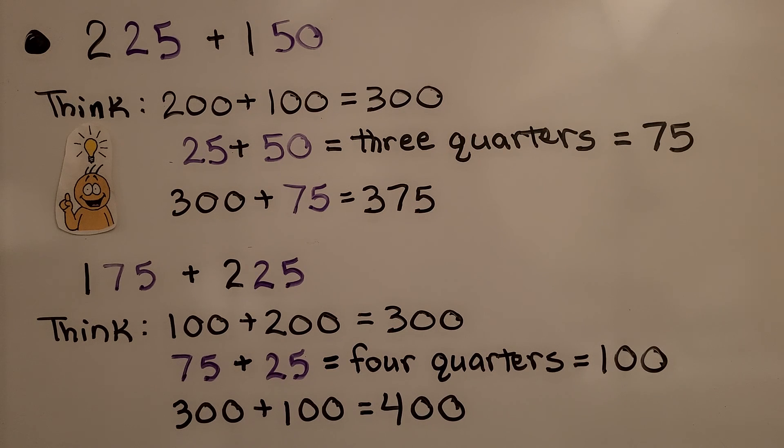If we need to add 175 plus 225, we think. The 100 plus 200 is equal to 300. And the 75 plus 25 is like four quarters. That's equal to a dollar, so that's 100. And we have 300 plus 100 is equal to 400.